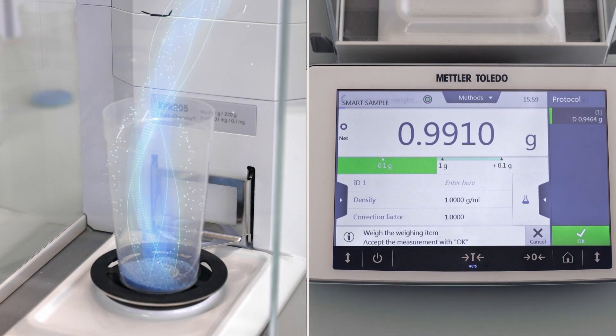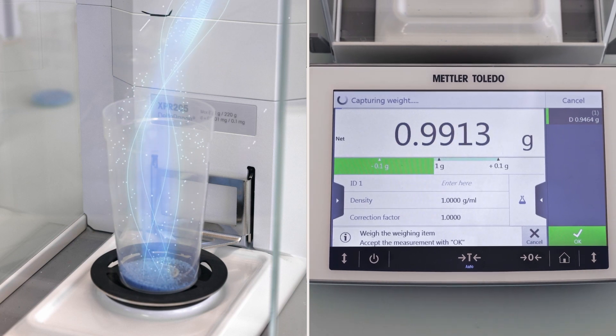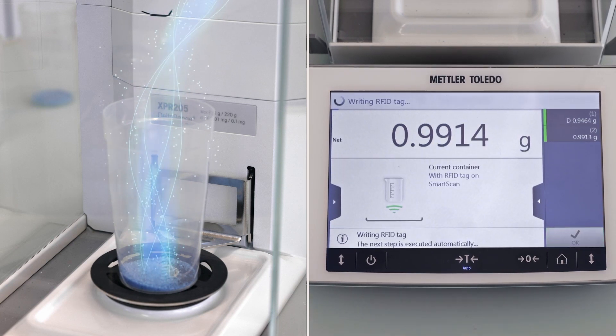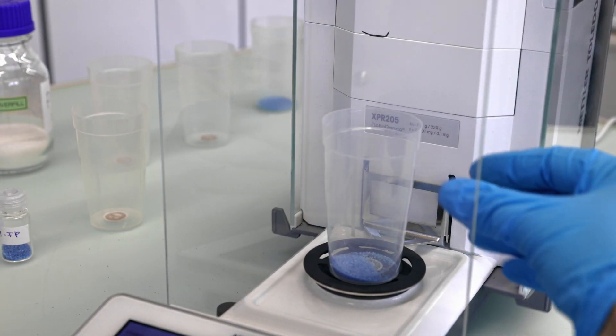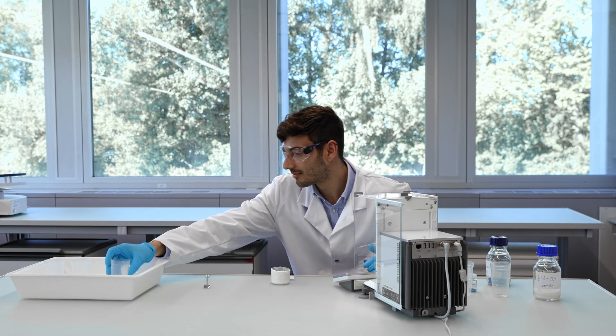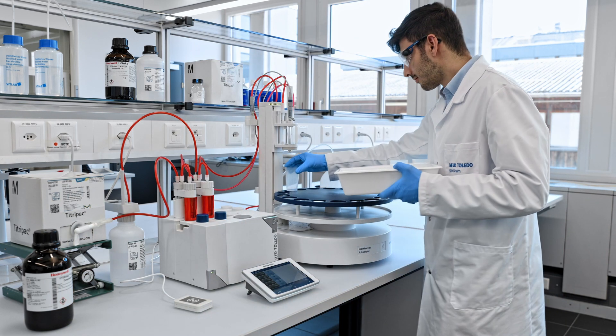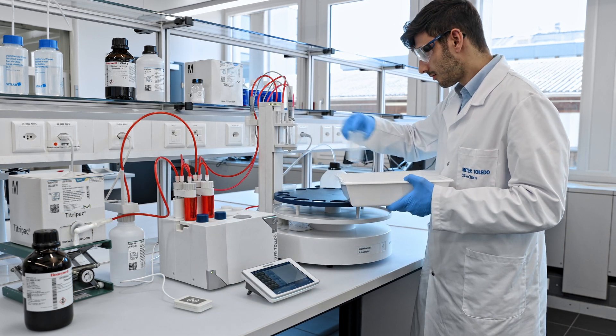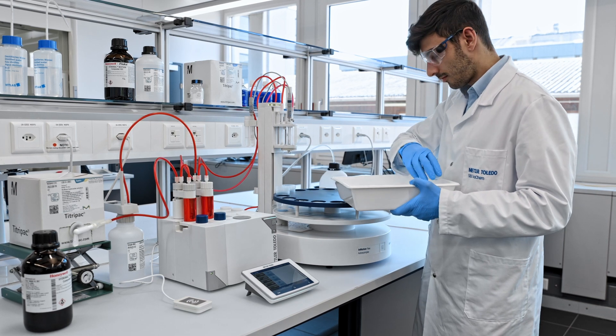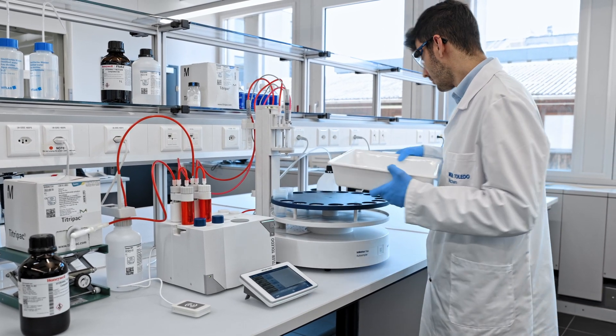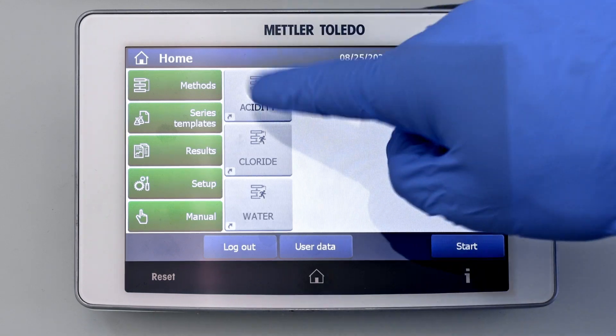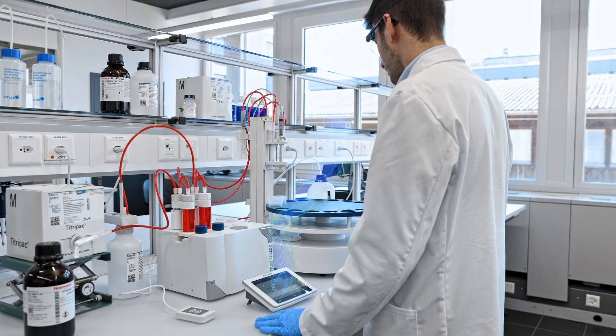The sample information is stored on the smart tag as part of the weighing process, eliminating written errors. Simply place your beaker on the titrator or in motion auto sampler and don't worry about the sample position or sample data. Start your analysis with just one click and let the titrator take care of the data management.